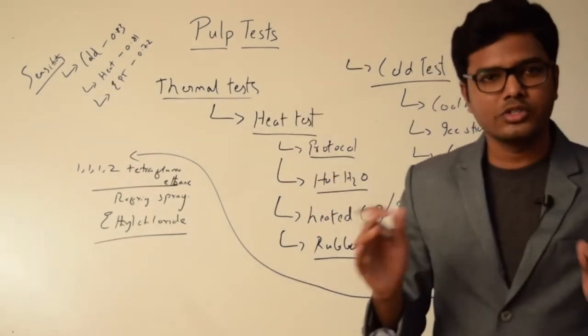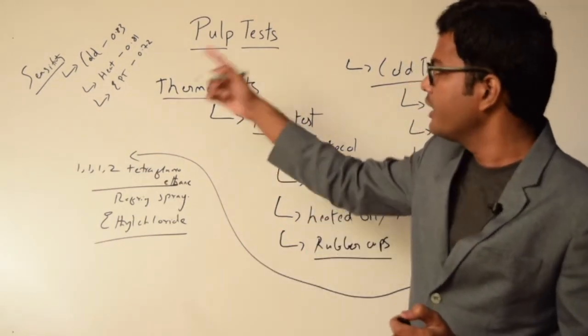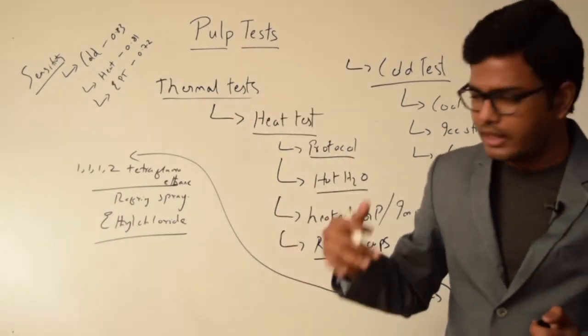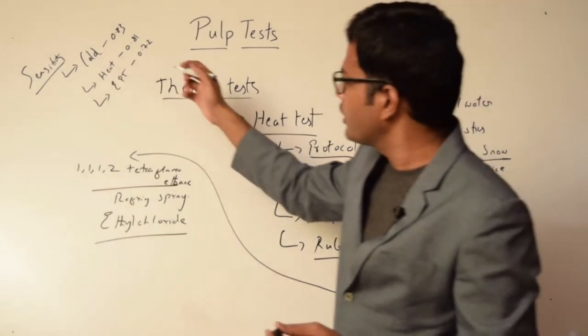It means that in 83% of the cases, cold test helps us diagnose teeth with disease—that is the sensitiveness of that test. Heat test is 81%, and EPT is 72%. They also analyzed the specificity of all these tests.